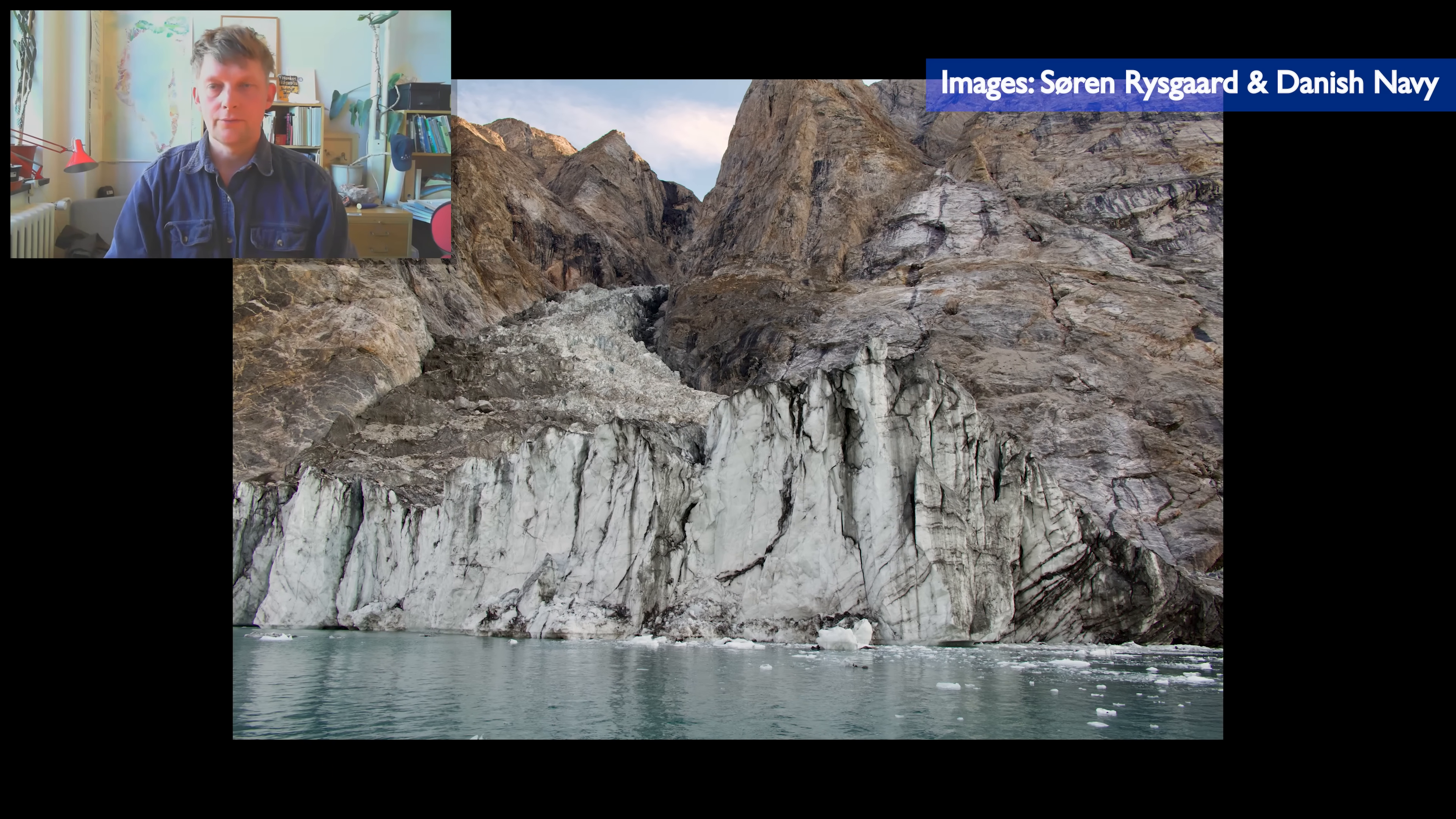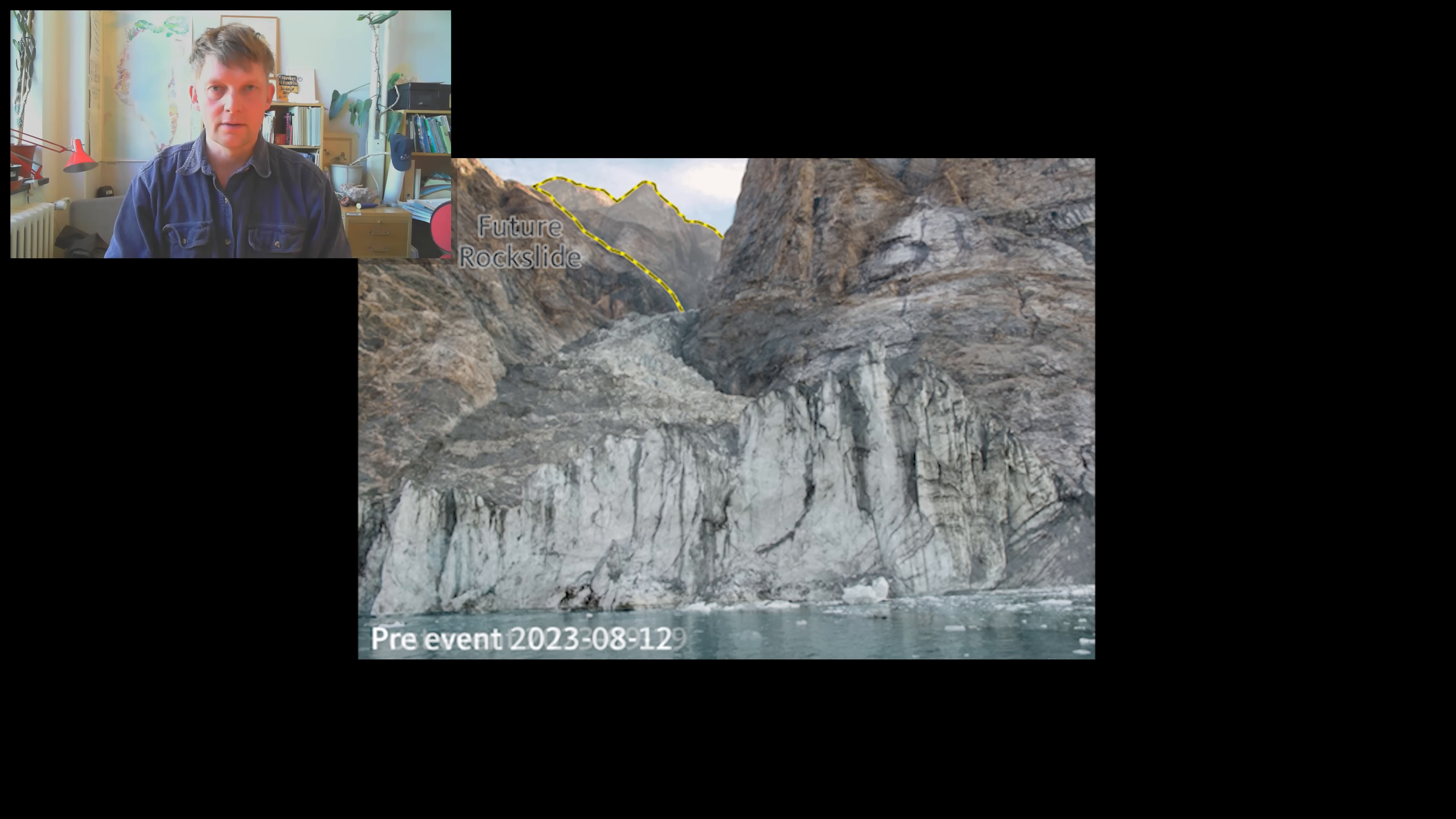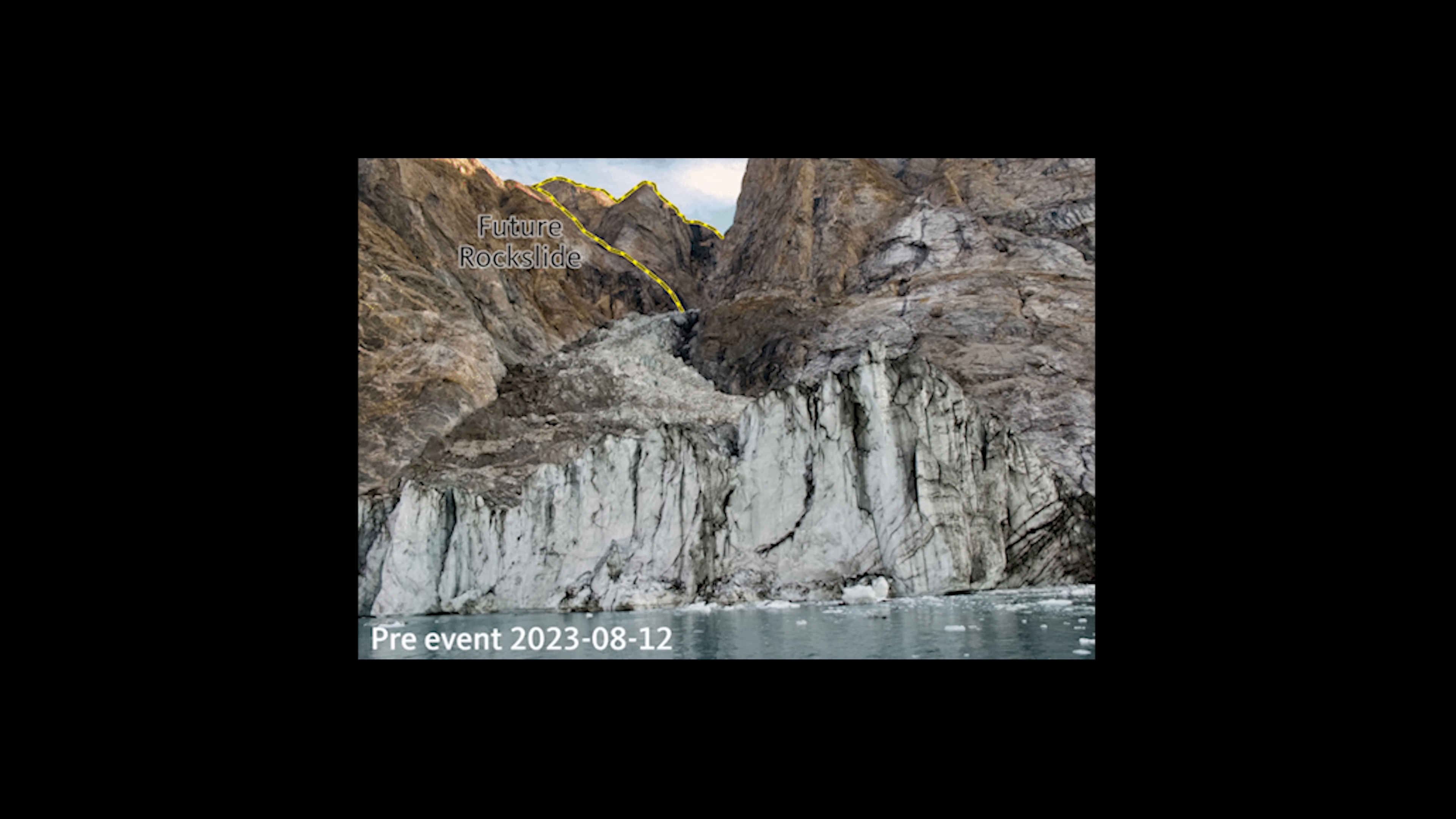Here's a close-up view of the glacier, taken just a couple of weeks before the landslide happened. The next photo is taken by the Danish Sirius patrol of the Danish Army, and shows how the glacier and mountaintop have changed during the event. You see the missing mountain seat at around 1.2 kilometer elevation.